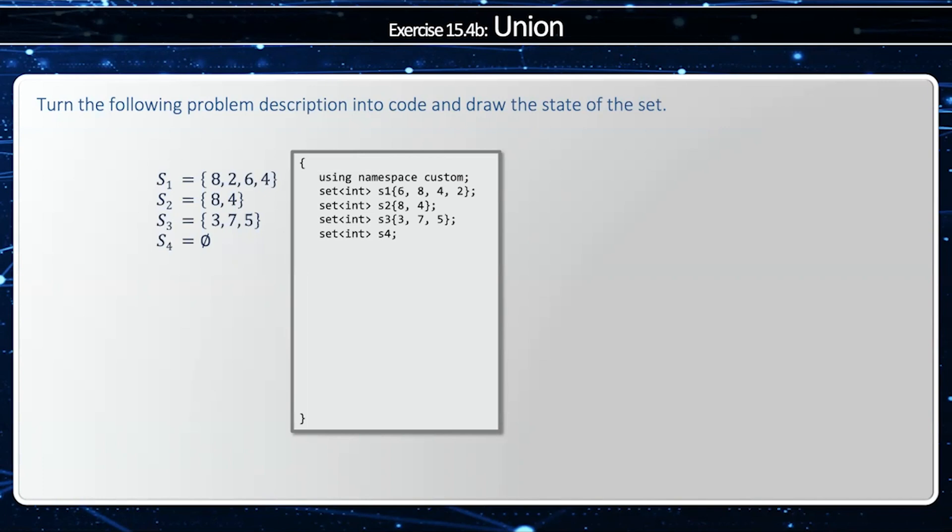S2 equals 8, 4. S3 equals 3, 7, 5. And S4 is empty set. And the default constructor will construct that.